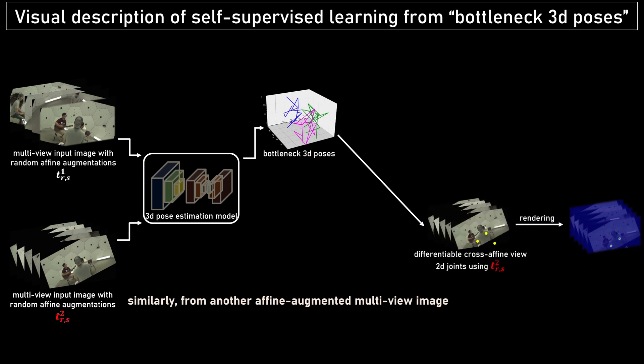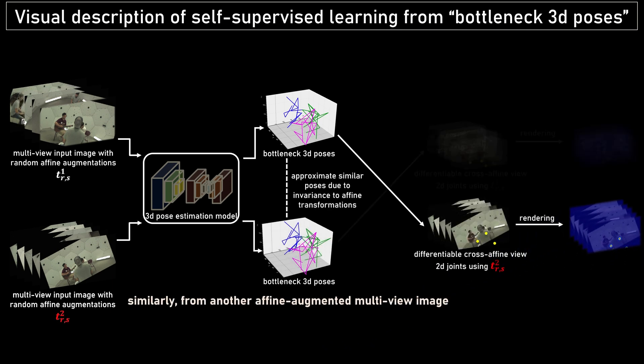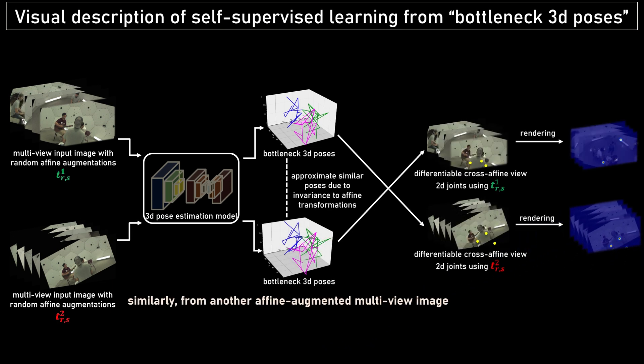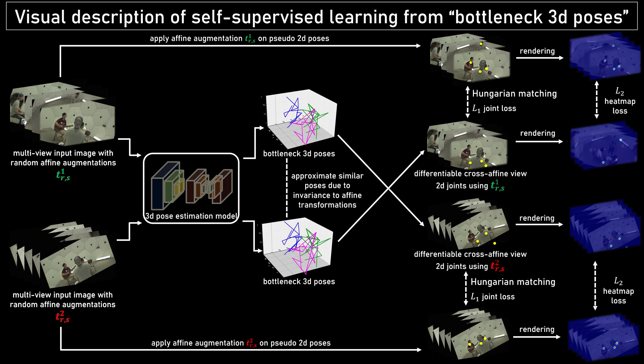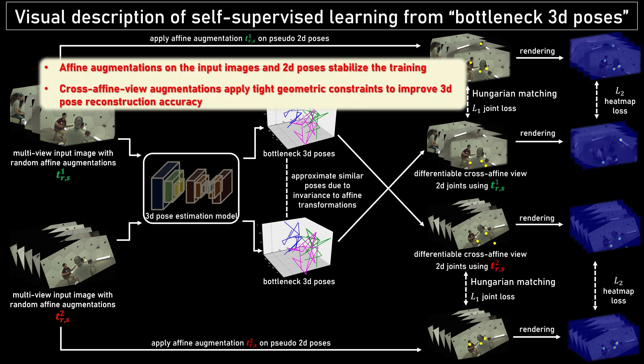Similarly, we do the same to the second group of images. After we obtain the 2D outputs and 2D labels, we use the L1 joint loss with Hungarian matching and L2 heat map loss to train the model. We call this swapping process the cross-affine view strategy, which can apply tighter geometric constraints to improve the model accuracy.